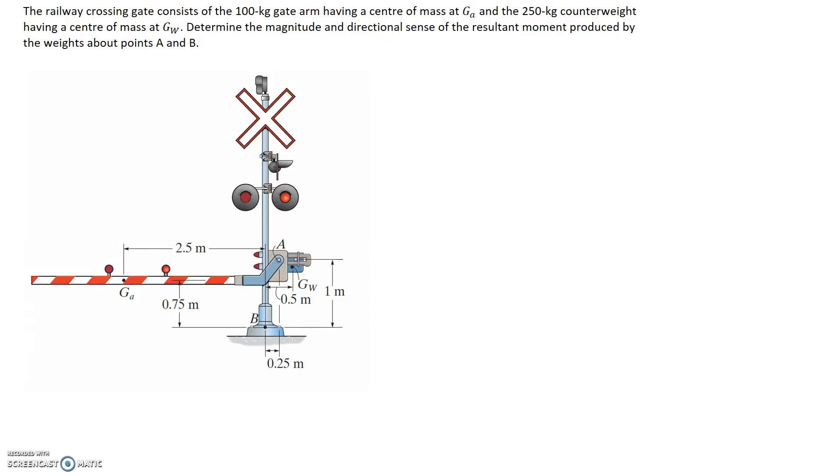So let's start off by drawing ourselves a diagram where we mark the forces on it. We can put it over the top of this one. We're told that we have a gate arm which is 100 kg. That's this one here.